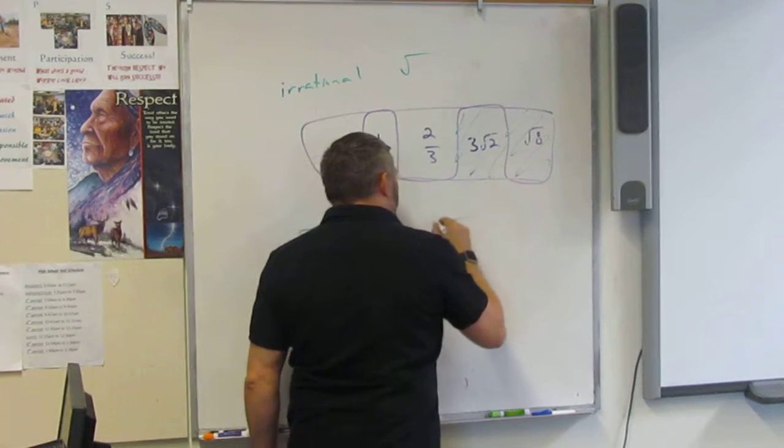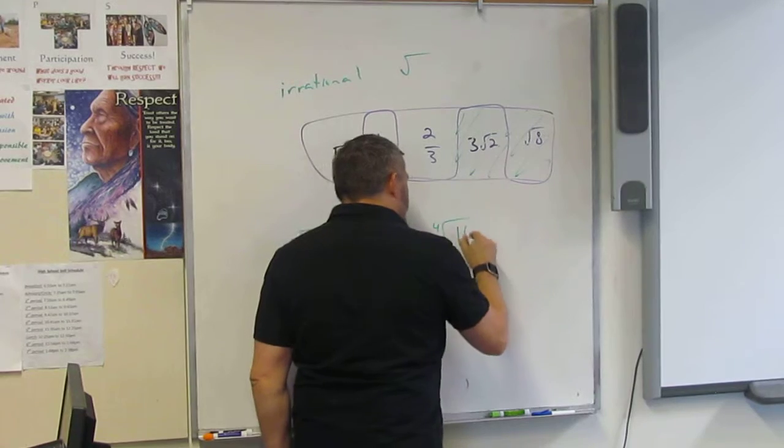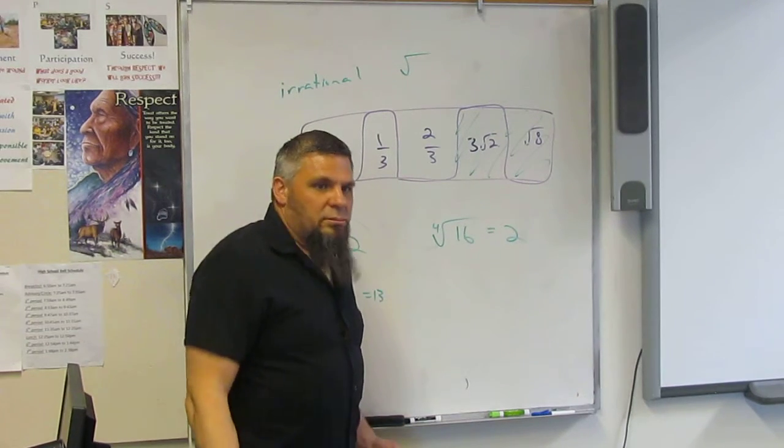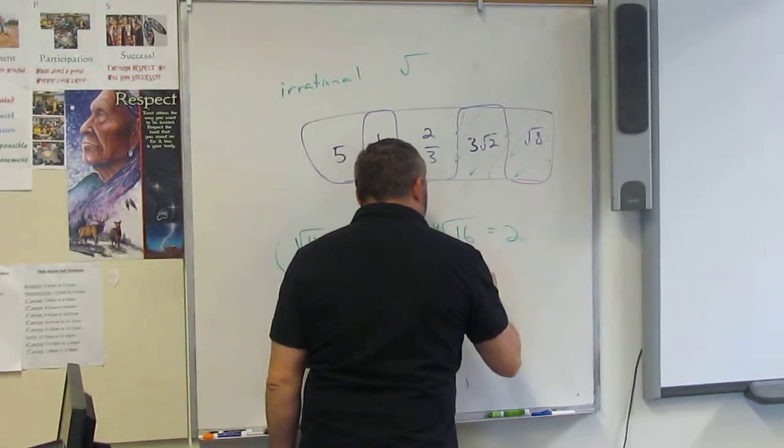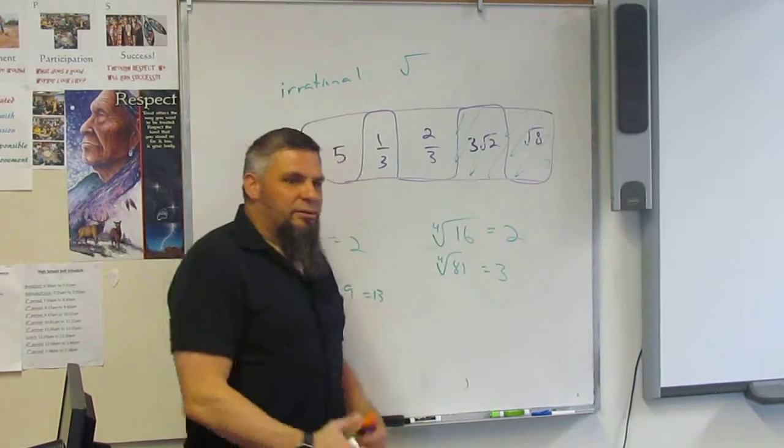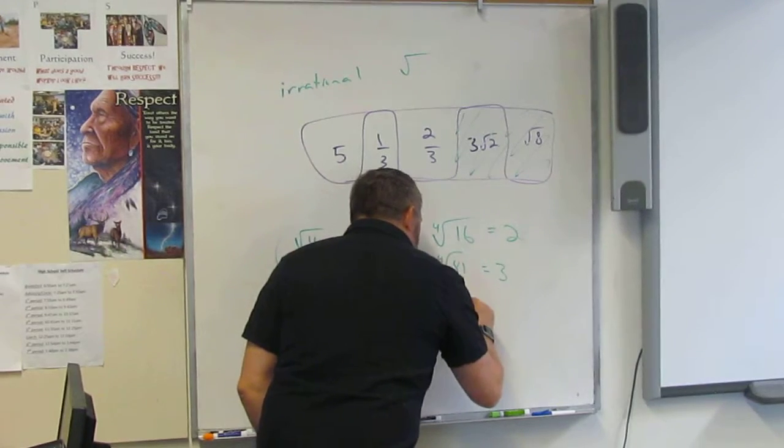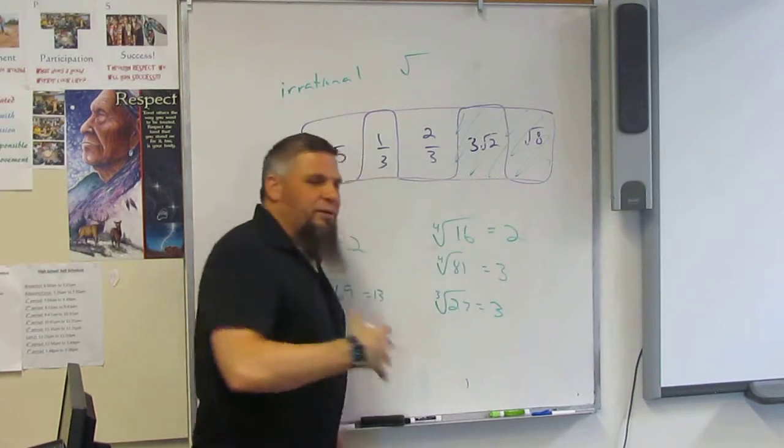If I did the fourth root of 16, well, that's two. Nothing wrong with that. The fourth root of 81 is three. There's nothing wrong with that. The cubed root of 27 is three. There's nothing wrong with that.